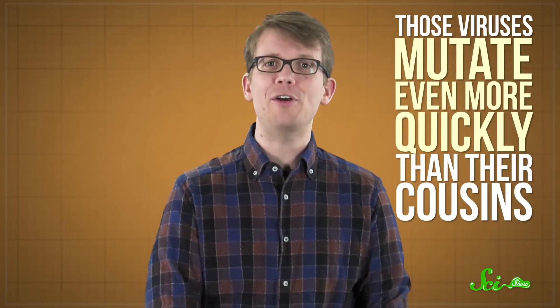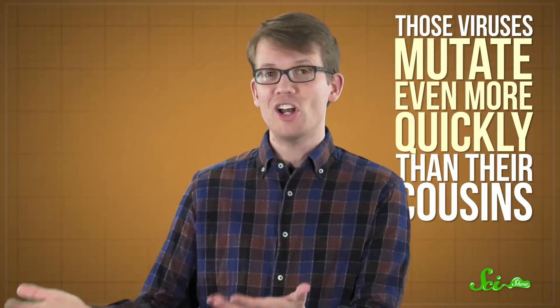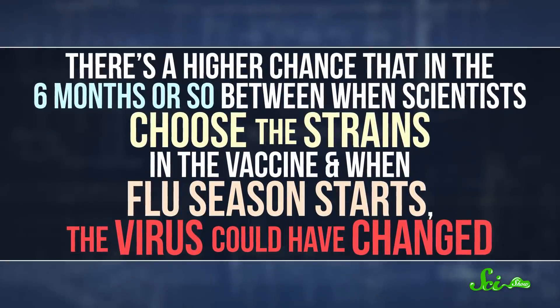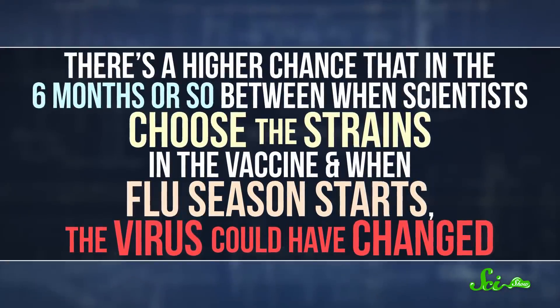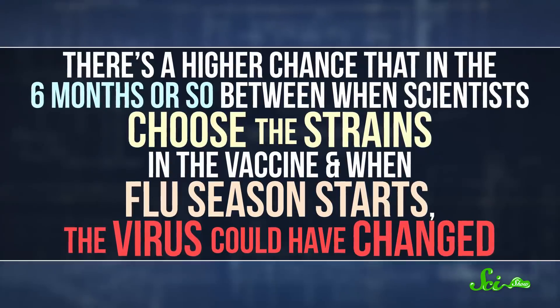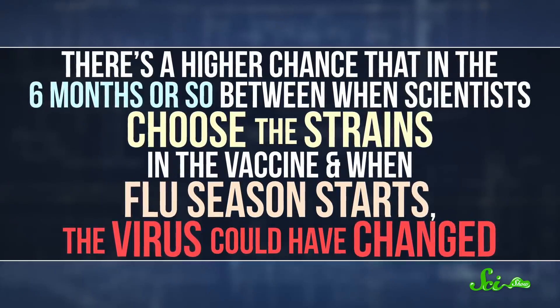Since flu viruses are changing all the time, scientists have to make an educated guess as to which specific viruses are likely to circulate in a given season, and then make a seasonal flu shot that will protect against those three or four strains. In the case of H3N2, this is especially hard to do, because those viruses mutate even more quickly than their cousins. That means there's a higher chance that in the six months or so between when the scientists choose the strains in their vaccine and when the flu season starts, the virus could have changed.